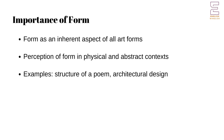In literature, form manifests in various structural elements, such as the stanza of a poem, the acts of a play, or the chapters of a novel. While form may initially be perceived at a physical level, such as the geometric pattern of a building or the structure of a poem, it also operates at a deeper, more abstract level. The New Critics did not invent these forms, but they emphasized their importance in understanding and appreciating literature. By focusing on how these forms contribute to the overall effect of a work, the New Critics helped to illuminate the ways in which structure and meaning are intertwined.